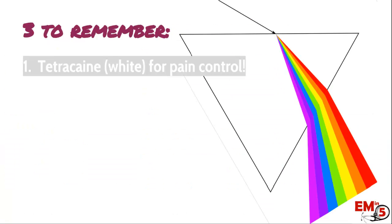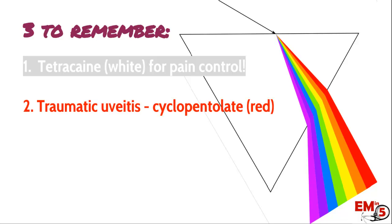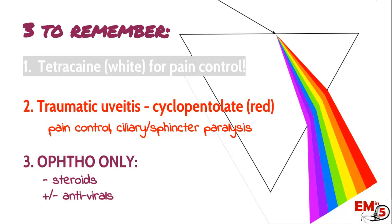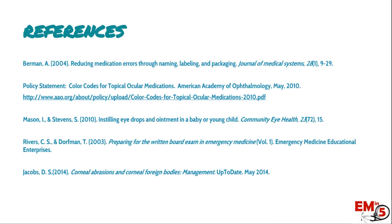So three key things to remember. First, tetracaine — the white tops — you're going to be using these really frequently; get them out right away for patients in the ER to provide pain relief. Second, remember your red tops for cycloplegics like cyclopentolate for traumatic iritis and uveitis — they provide real pain control for the severe photophobia these patients get. And lastly, in the ophthalmology-only group, remember you have steroids and sometimes antivirals. Thanks for joining us on EMN5.